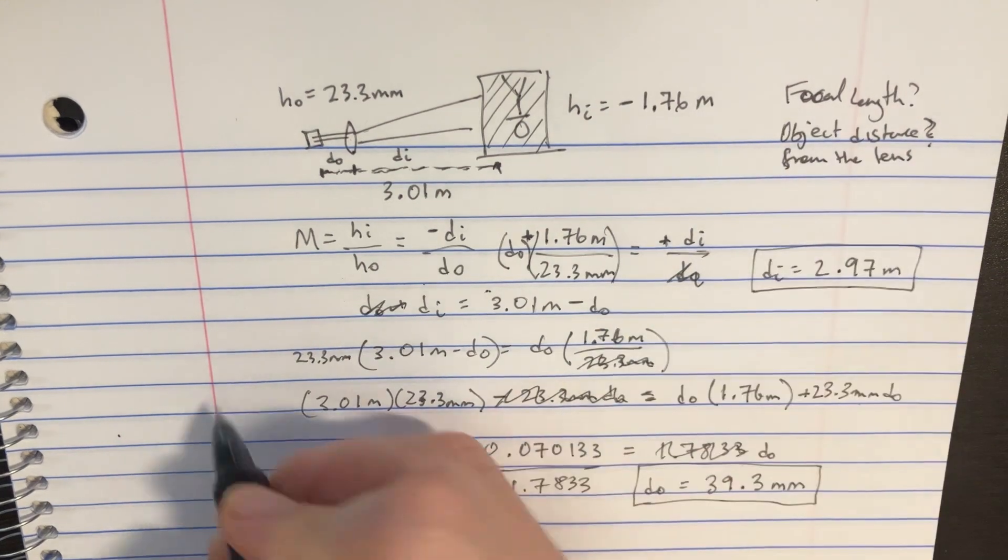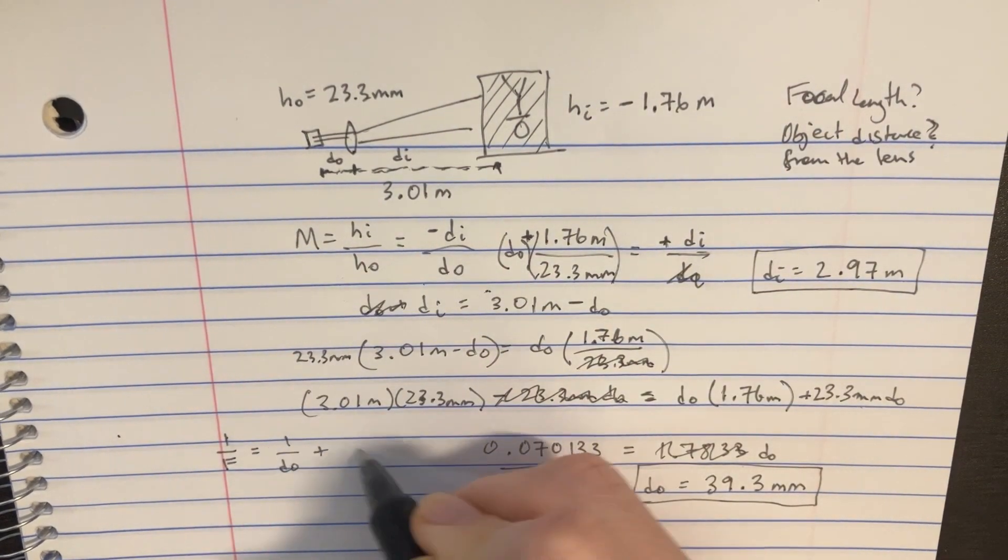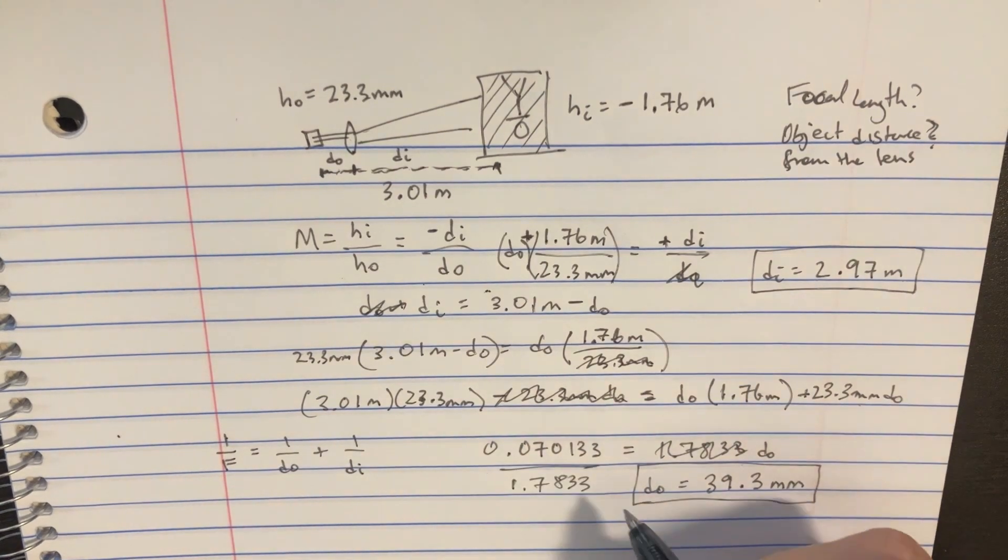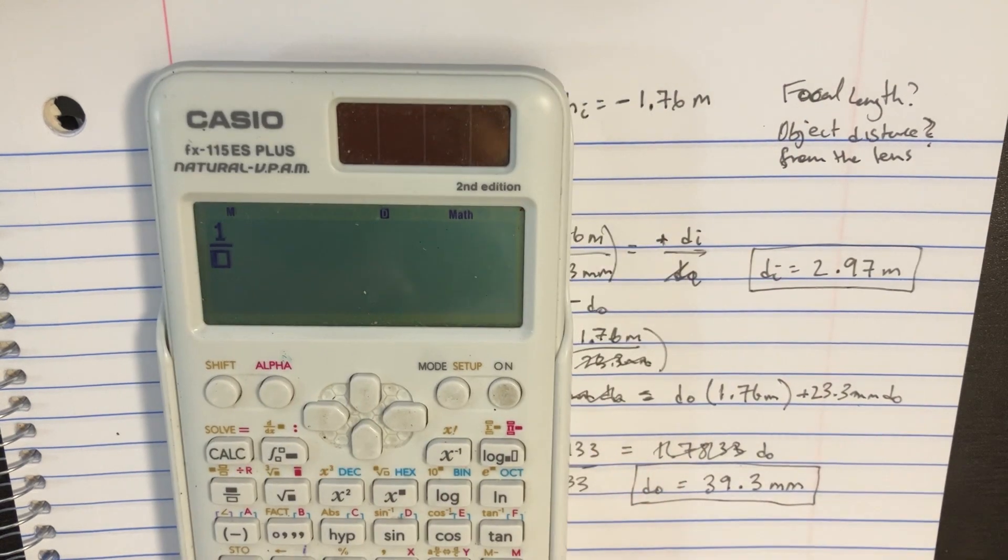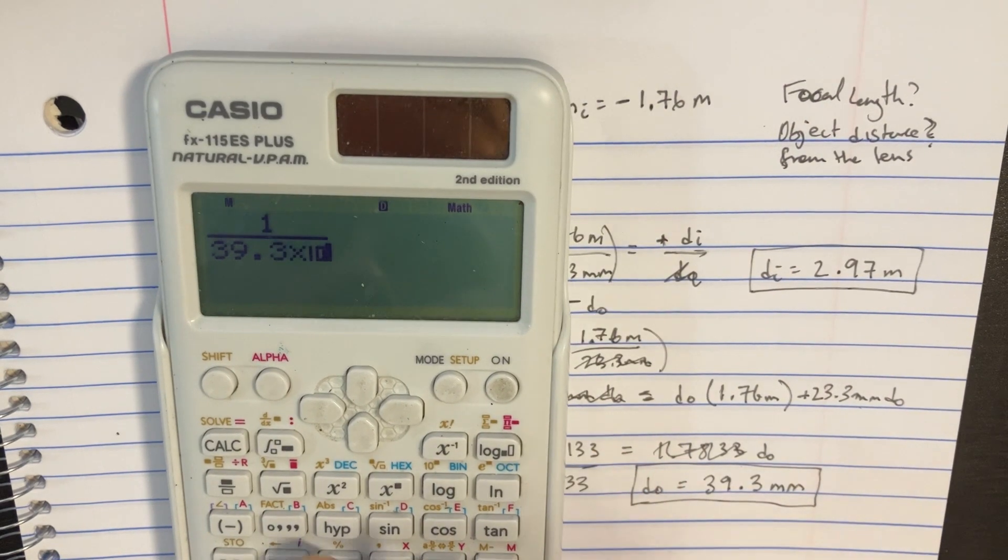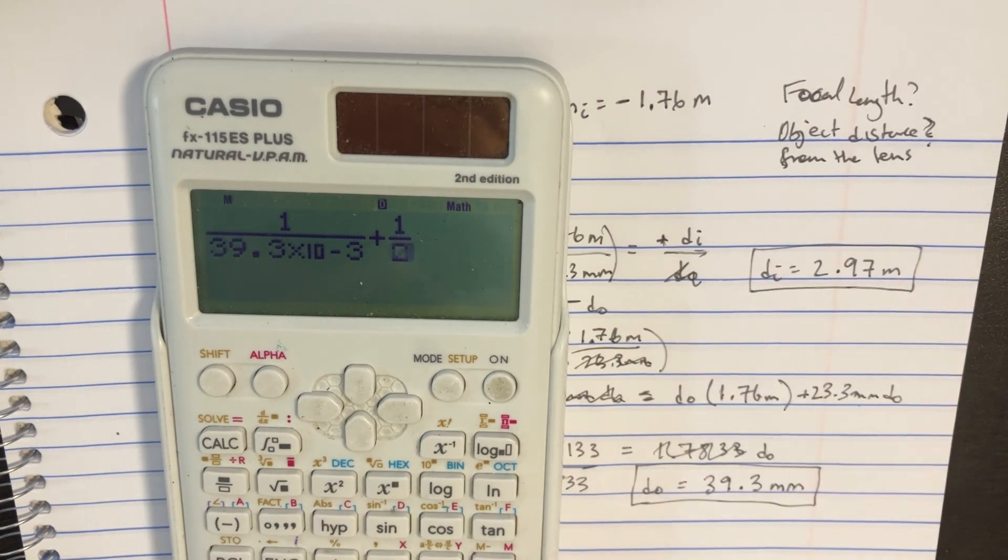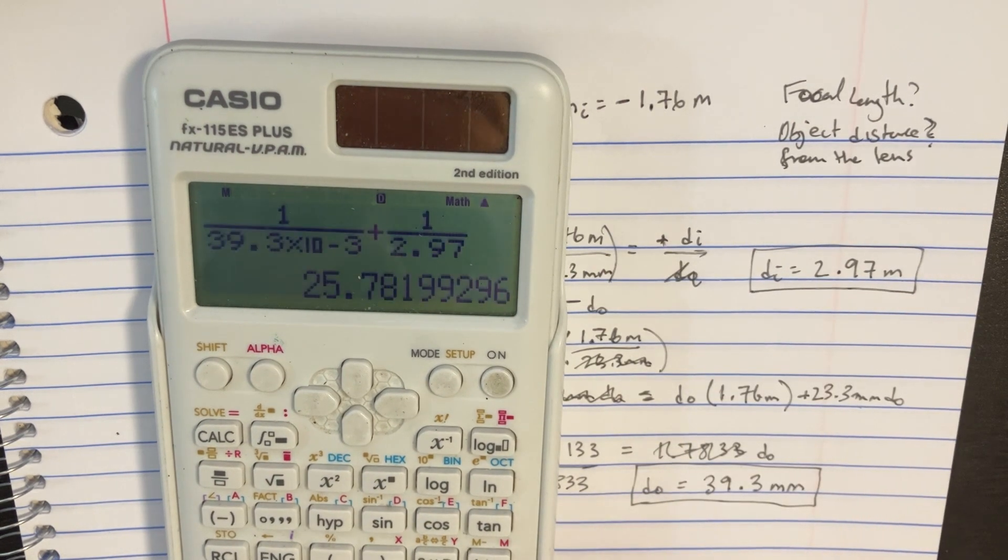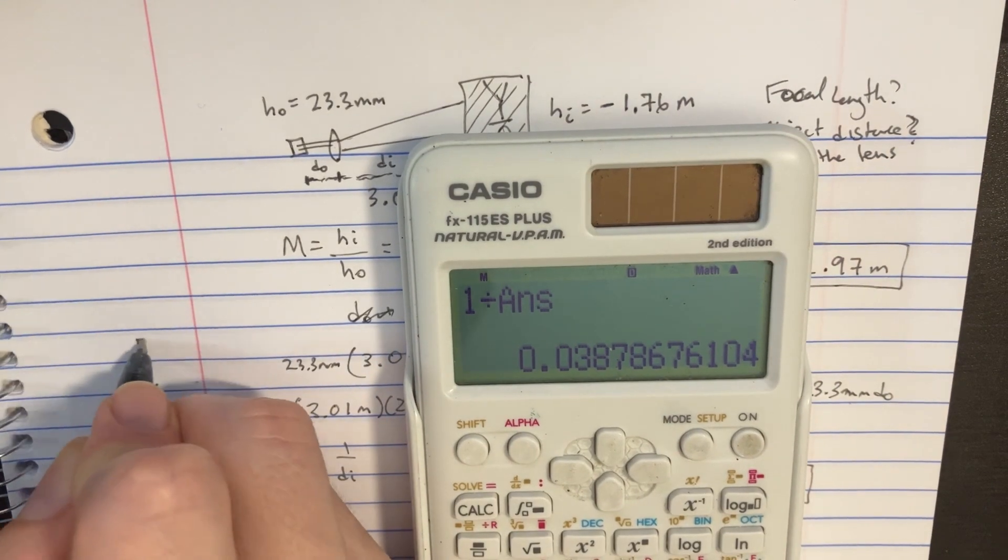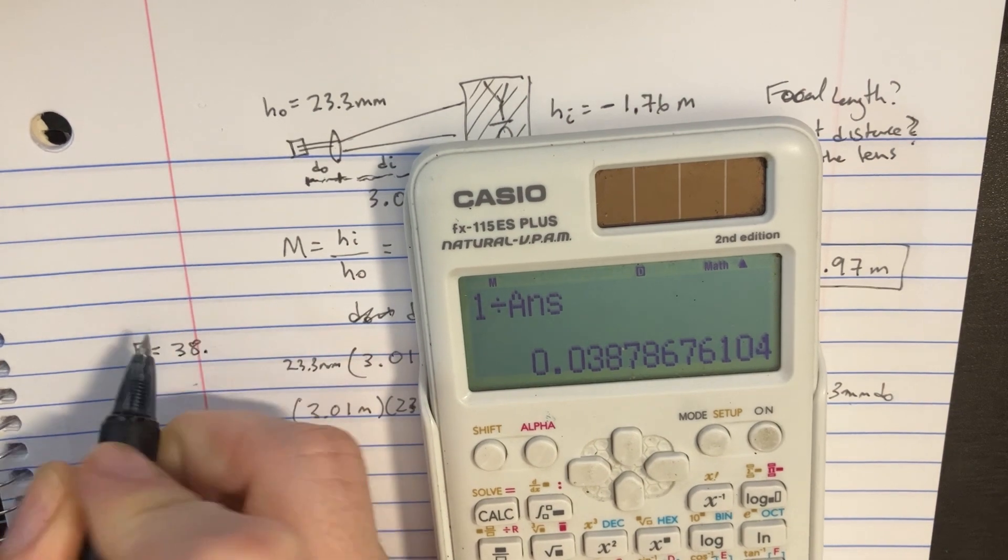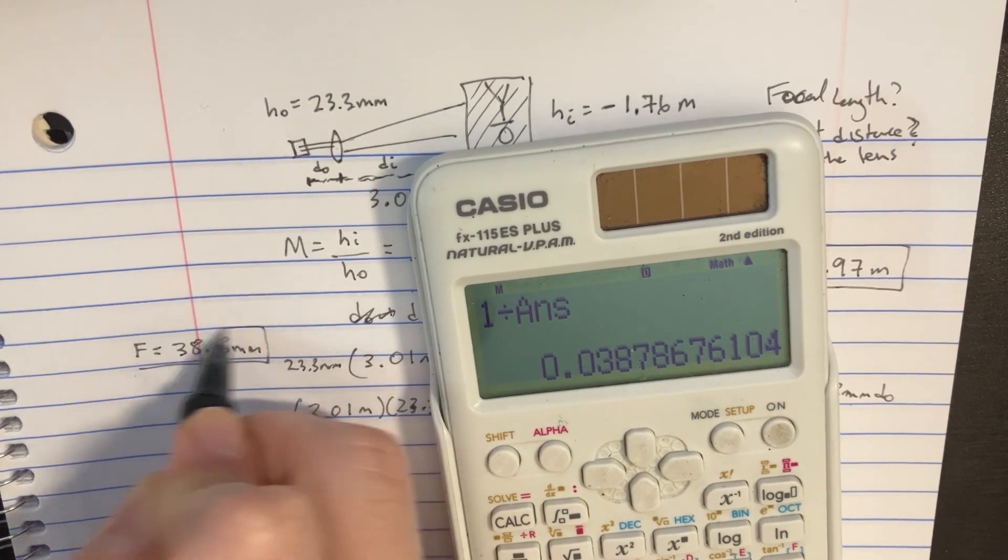So now to find the focal length, we just use the equation 1 over F equals 1 over DO plus 1 over DI. We can just do that in the calculator. Let's go 1 over the object's distance, 39.3 millimeters, plus 1 over the 2.97 meters there. So then we're going to take 1 over the answer. So we find that the focal length F is equal to 38.8 millimeters. Awesome.